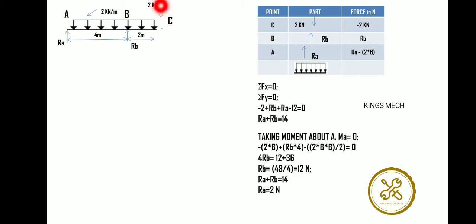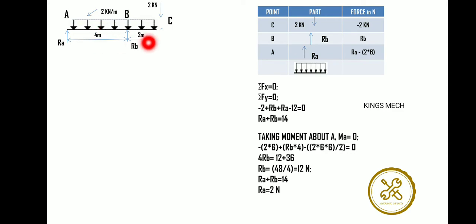Now taking moments about A: minus 2 into 6, then positive RB into 4, and the UDL moment value WL²/2 = 2 × 6 × 6 / 2 = 36. So: minus 12 + 4RB + 36 = 0, giving 4RB = 48, therefore RB = 12.